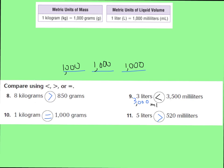And your answers for number 10 and 11 are as follows. For number 10, you should have equal to, because one kilogram is equal to 1,000 grams, just like you can see right here. And for number 11, 5 liters has the value of 5,000 milliliters, and I know 5,000 milliliters is greater than 520 milliliters. Let's move on to our problem solving now.